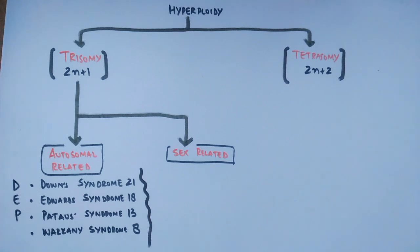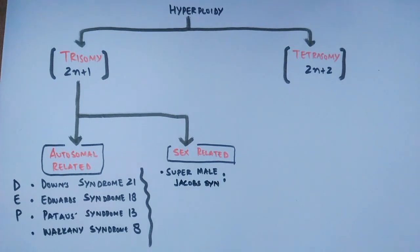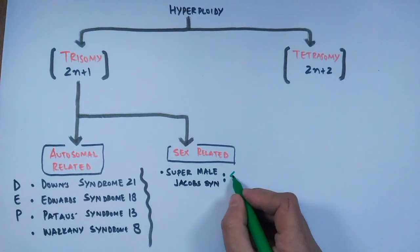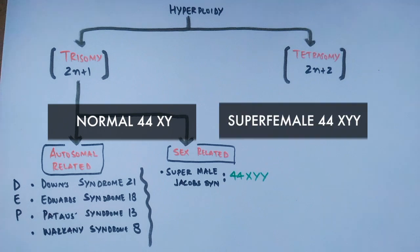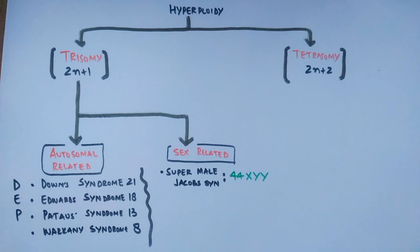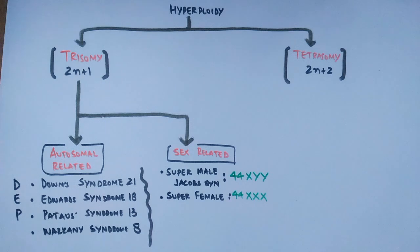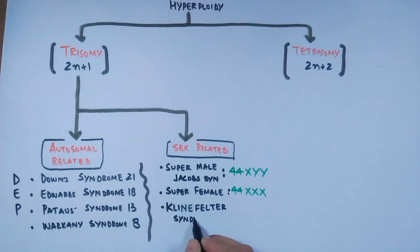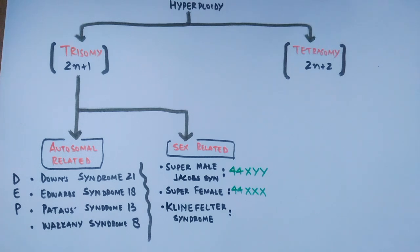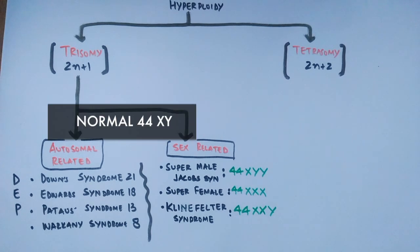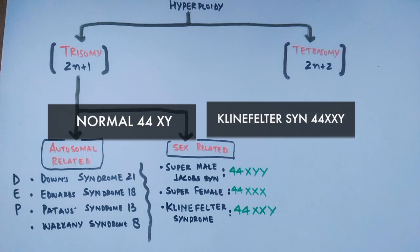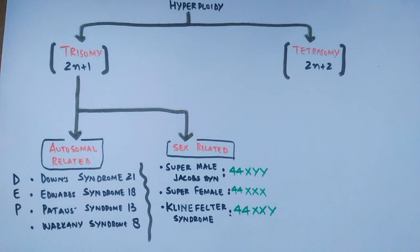In sex-related trisomy, we have Super Male or Jacob syndrome, where an extra Y chromosome is present, giving the condition 44+XYY instead of the normal 44+XY. Then there is the Super Female condition, where an extra X chromosome gives the condition 44+XXX. Finally, Klinefelter syndrome occurs in males with an extra X chromosome, turning the chromosomal condition to 44+XXY instead of the normal 44+XY.